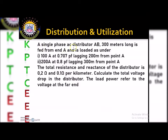So this is the problem. A single-phase distributor AB is 300 meters long and is fed from end A, loaded as follows: first condition — 100 amps at 0.707 power factor lagging, 200 meters from point A; second condition — 200 amps at 0.8 power factor lagging, 300 meters from point A. The total resistance and reactance of the distributor is 0.2 ohm and 0.1 ohm per kilometer.